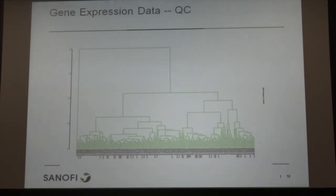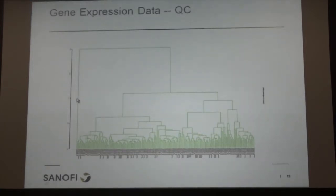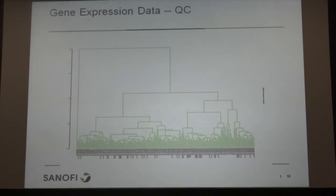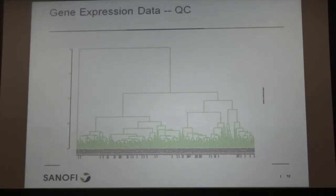Looking at this clustering, you can see one single subject is in its own class by itself — that suggests this subject is highly likely to be an outlier. This is one way we use to look at correlations between subjects.